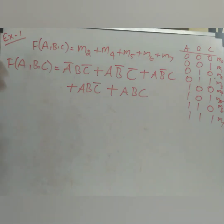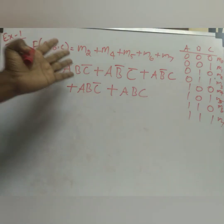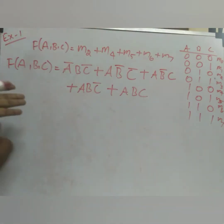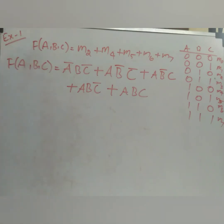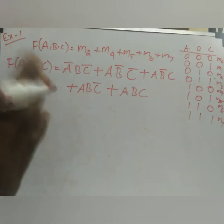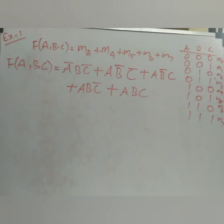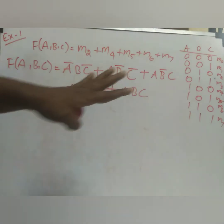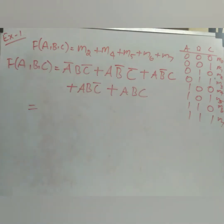So only the min terms specified are selected. After writing the truth table you can write the expression with all the variables. This is the standard SOP form. The question asks us to derive the minimal SOP from this standard SOP form.